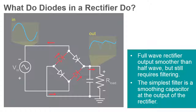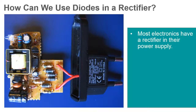Without rectifiers, virtually none of our electronics would work at all — we would need to generate and distribute DC power. The main application of rectifiers is to turn AC power into DC power. Since almost every electronic device requires DC power to operate, it means there's probably a rectifier in there somewhere.